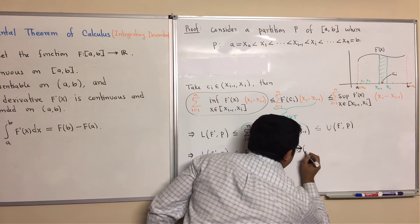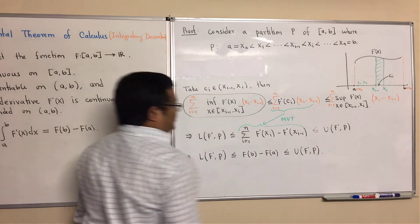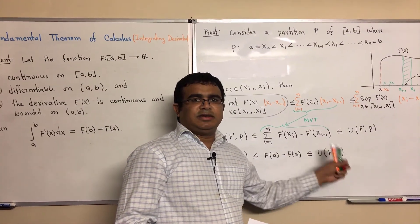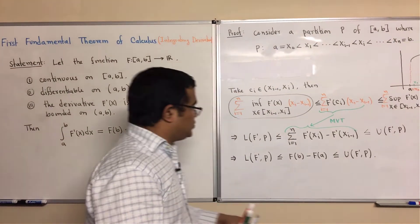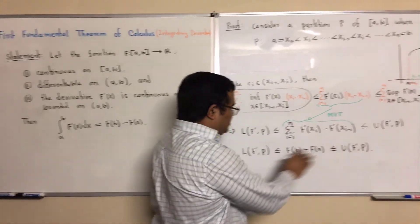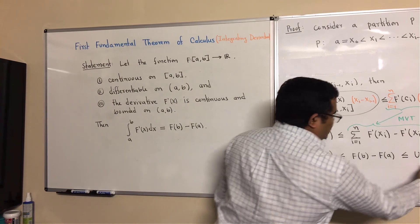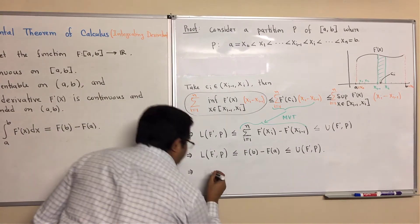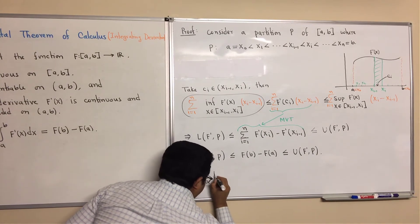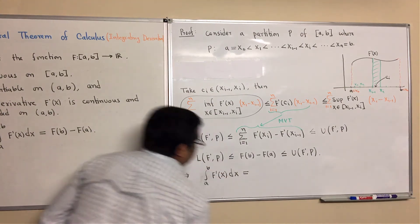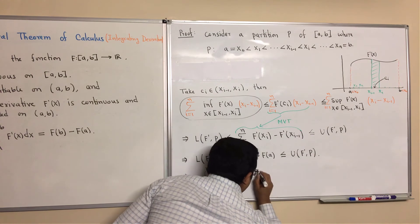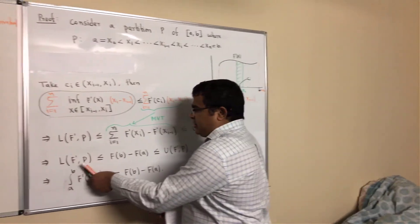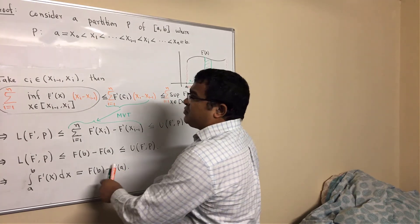Now since the function F prime is integrable, that means the lower Riemann sum and upper Riemann sum are equal. Since F of b minus F of a is less than or equal to the upper Riemann sum and greater than or equal to the lower Riemann sum, and those two are equal, we can write: the integral from a to b of F prime of x dx equals F of b minus F of a. So this is the proof of the First Fundamental Theorem of Calculus.